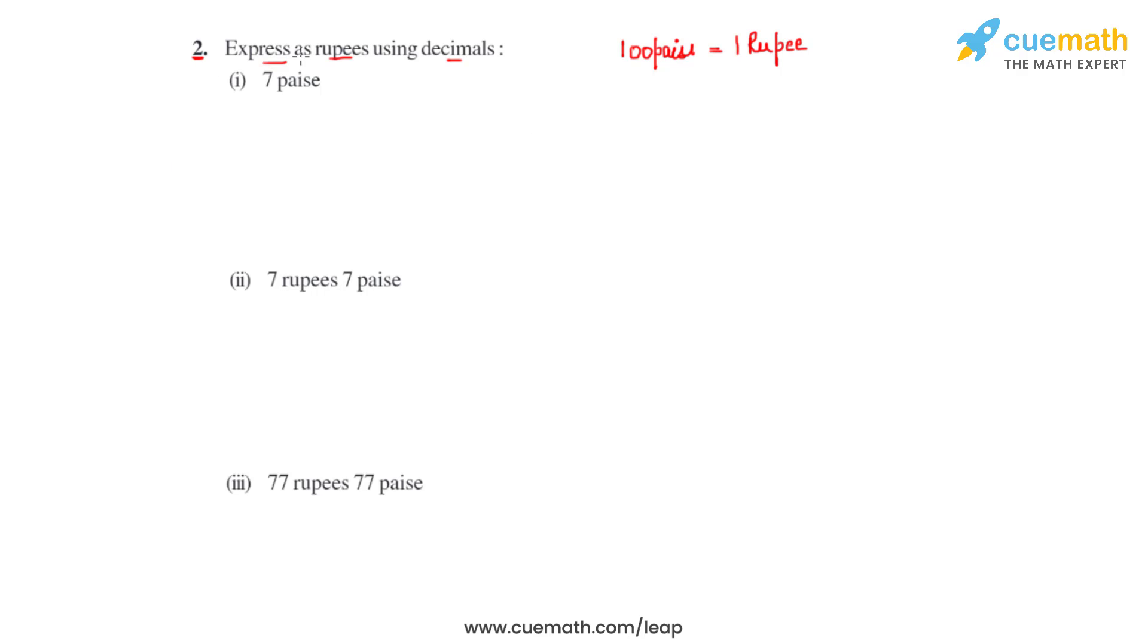To start with the first bit, we have 7 paise that can be written as rupees 7 over 100, and that comes out to be on division as a decimal which is rupees 0.07.